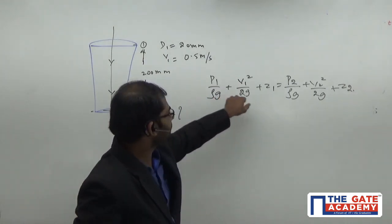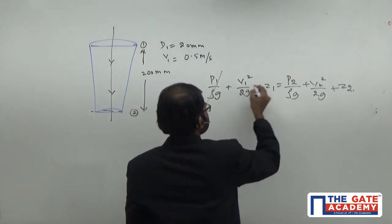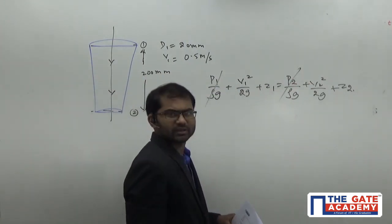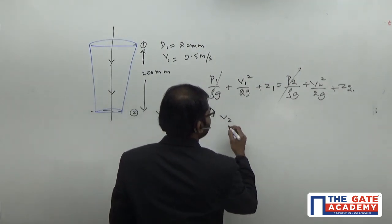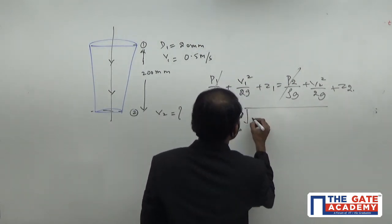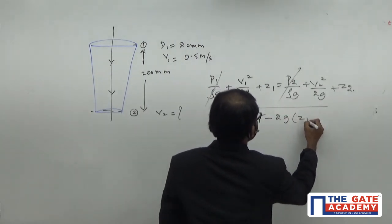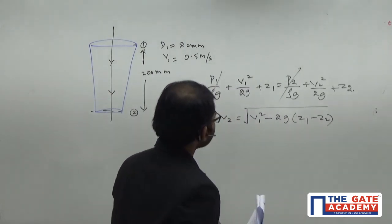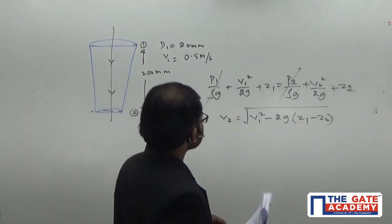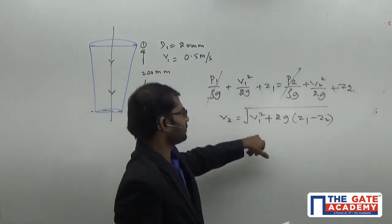In this case, I said that P1 and P2 will be equal to avoid the aspiration effect. So, both will be getting cancelled. Now, we need to get the value of V2. So, V2 will simply come as equal to root of V1 square plus 2g times z1 minus z2. If you simplify this, you will be getting this formula.